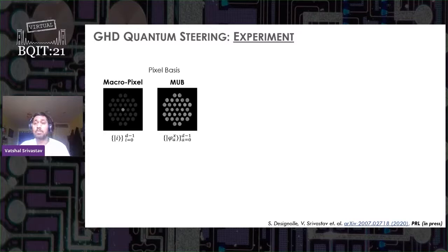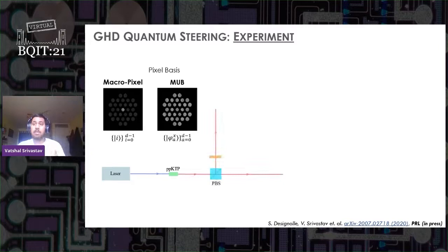Now how do we do it experimentally? We generate a pair of entangled photons in the position momentum degree of freedom via spontaneous parametric down conversion by pumping a non-linear crystal, here PPKTP. Here we perform measurements in pixel bases on spatial light modulators.